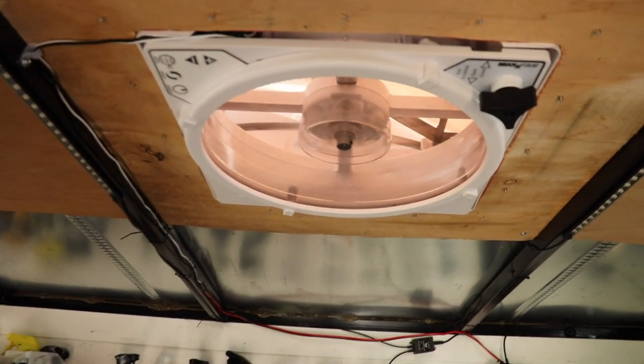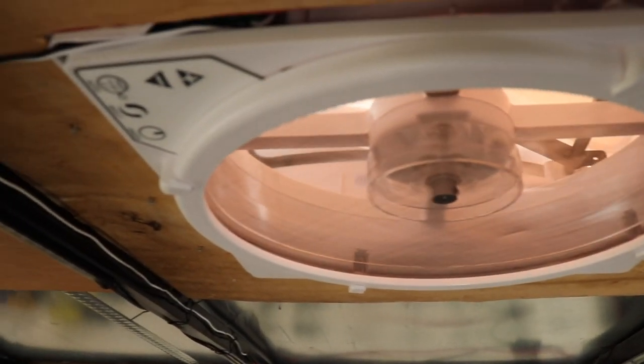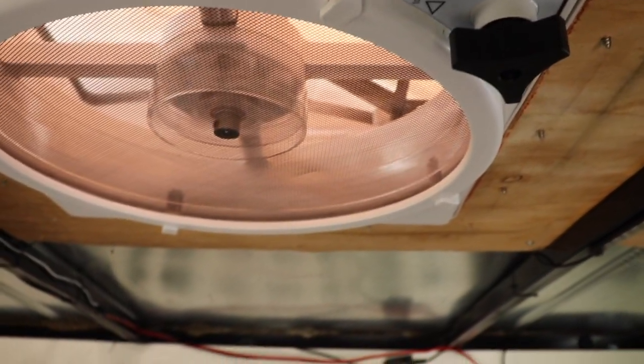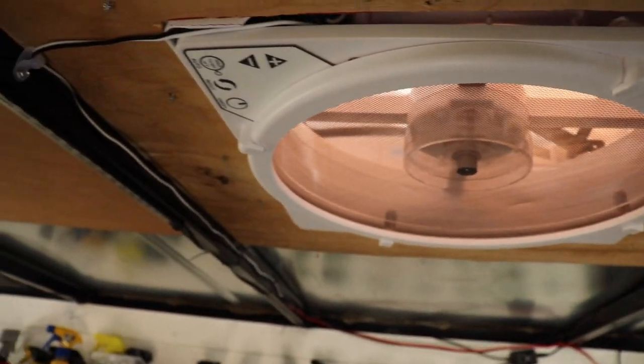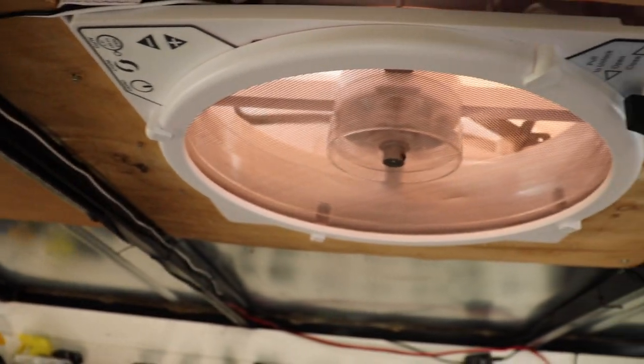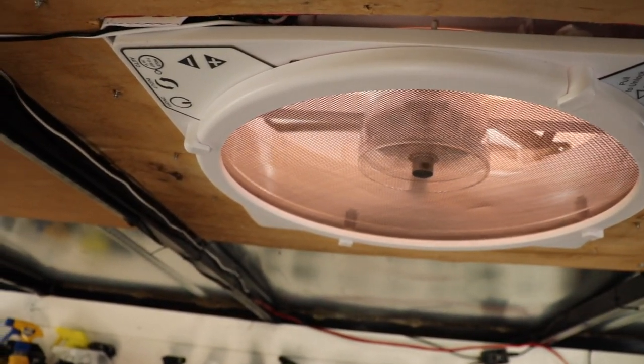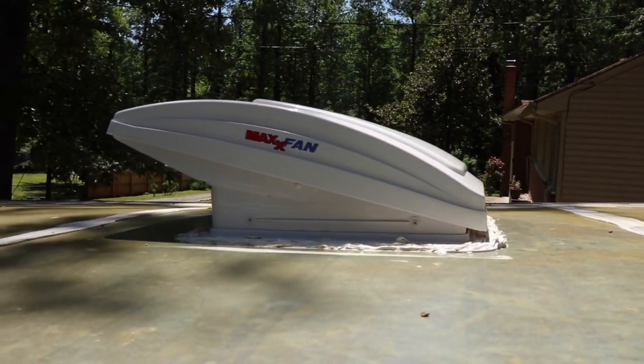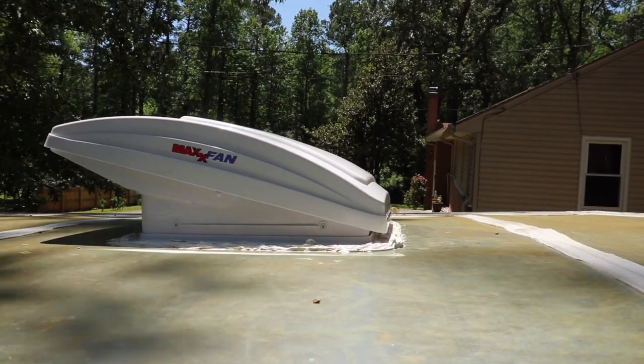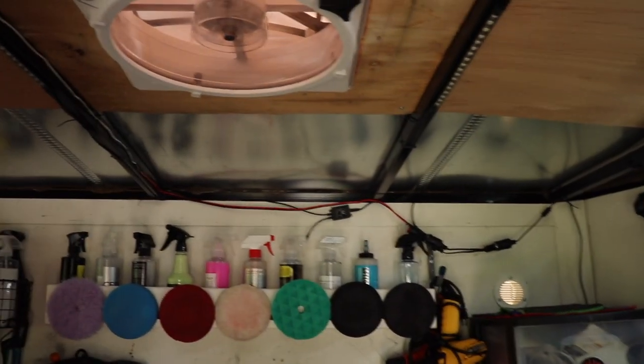Oh, one more thing. You're going to notice this trailer fan right here. This thing is awesome. So this is the Max Air and it has a bunch of different options. It's both intake and outtake. You can get them fancier than this with remote controls, but I just wanted something simple. It has 10 different speeds and check this out. So you can actually have this vent open while you're driving. So you always have constant airflow in here and I have it on low.